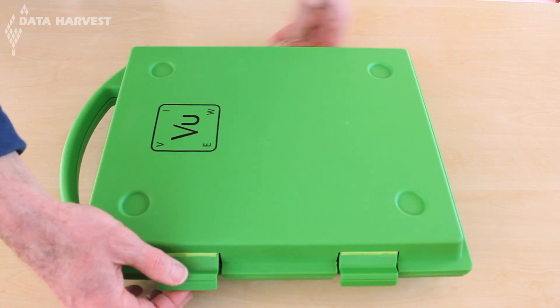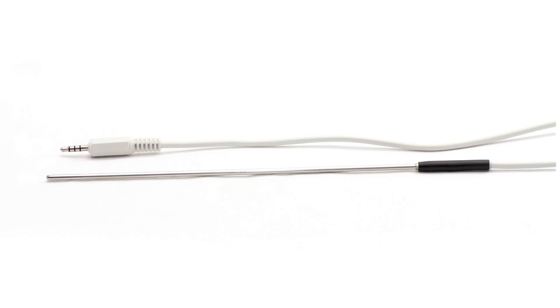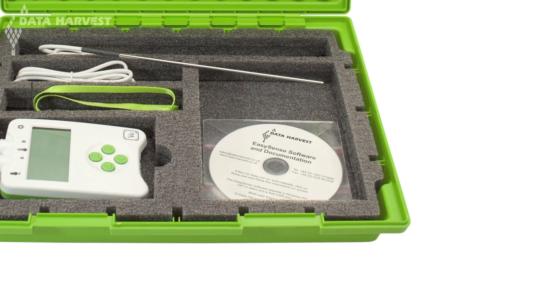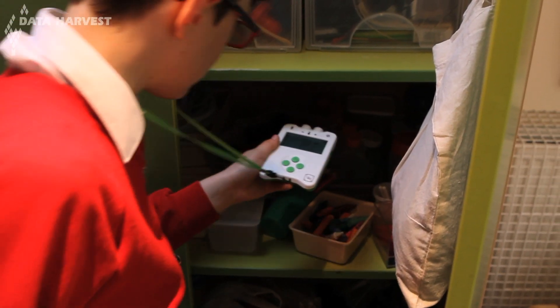It has built-in light, temperature and sound sensors, as well as an additional plug-in temperature sensor. Also included is the EasySense software, an e-book of over 40 experiments, and a handy lanyard.